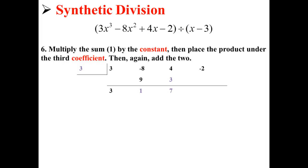Next, we multiply that sum, in this case 1, by the constant and place the product under the third coefficient. Then, again, we add the two. So here, we've taken 1 times 3 to get 3, and then 4 plus 3 equals 7.